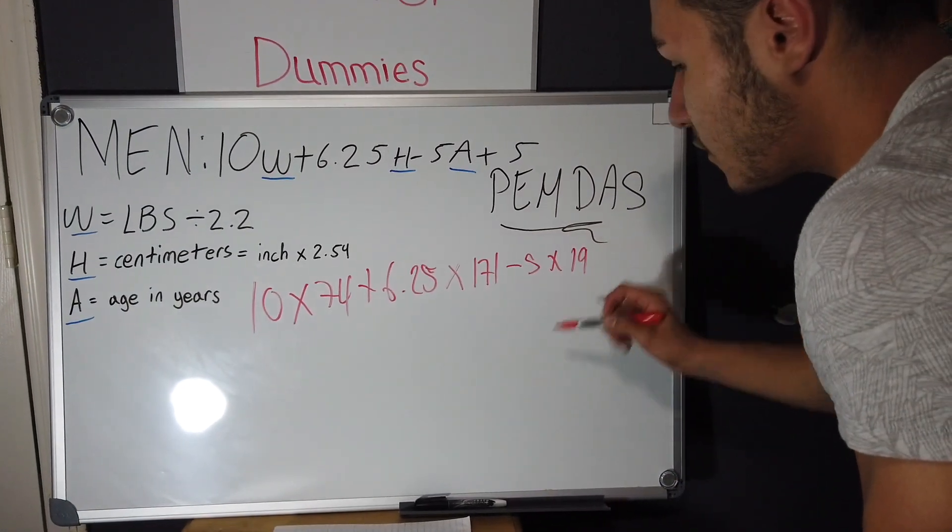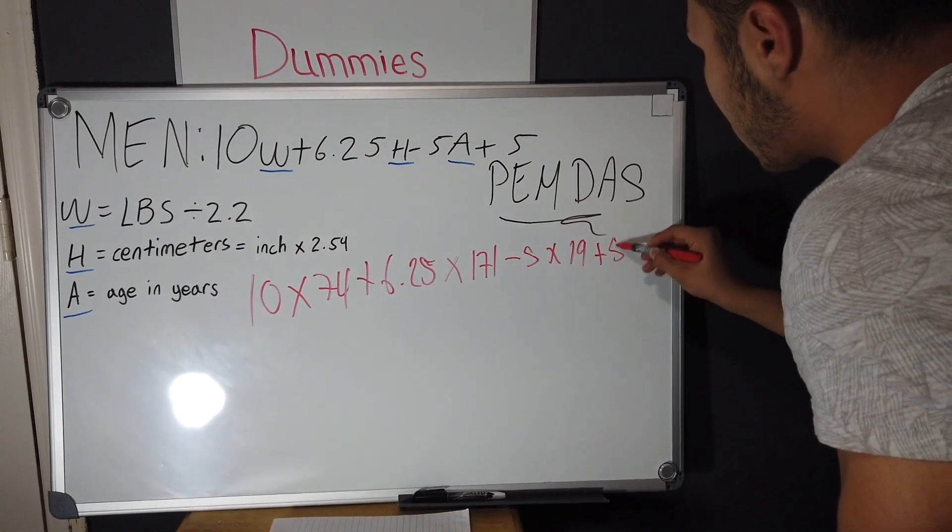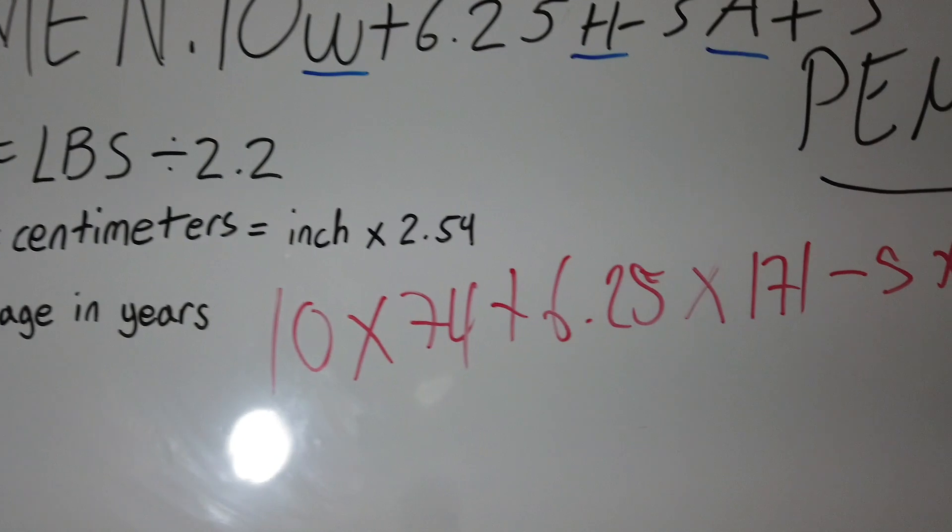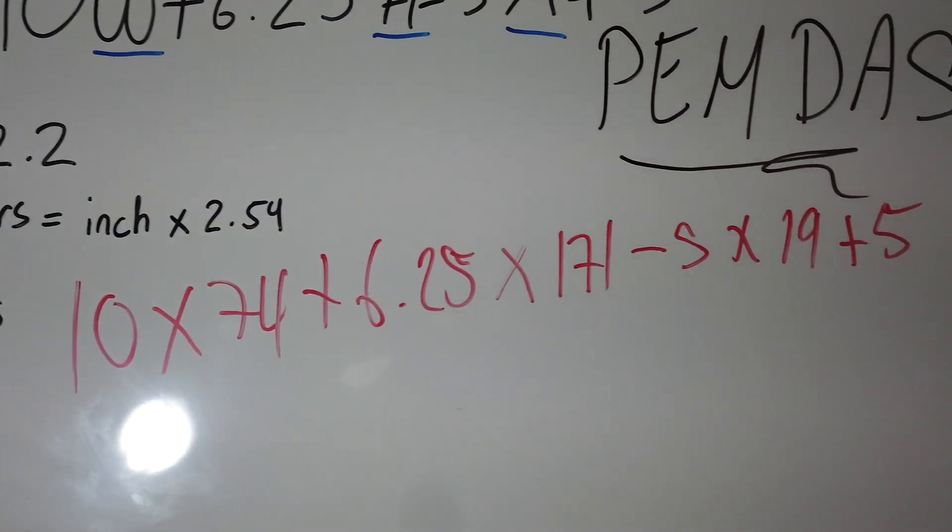And then move it over minus 5 times your age in years. So I'm 19 years old, so I put 19 plus 5. So that's the first part of the equation: 10 times 74 plus 6.25 times 171 minus 5 times 19 plus 5.